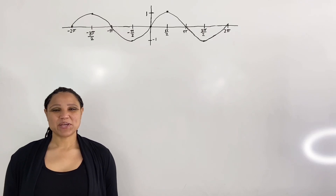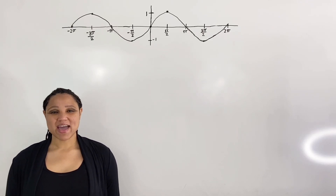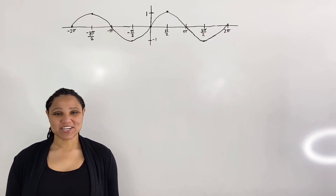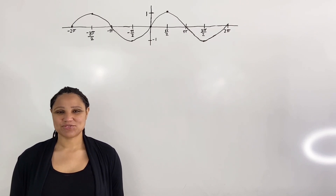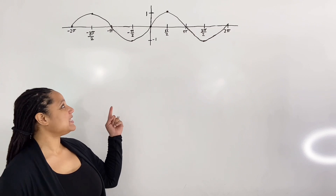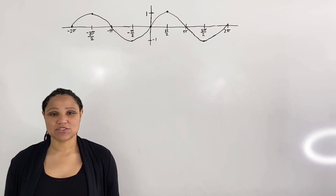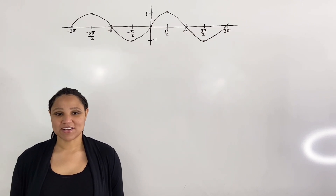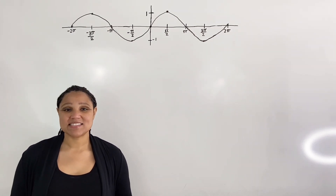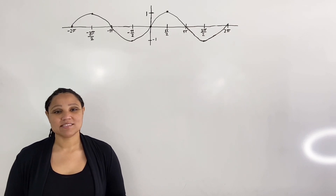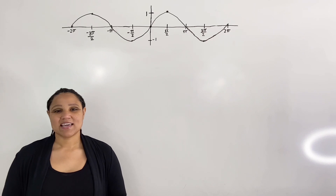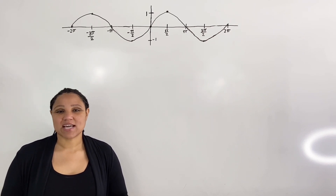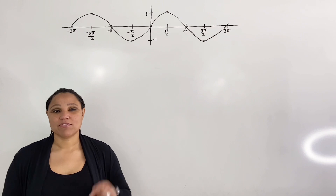In this video we are going to graph the inverse sine function and identify the domain and range. We begin with the original sine graph. Sine is a function because it passes the vertical line test — if you draw any vertical line, it will only intersect the graph once.